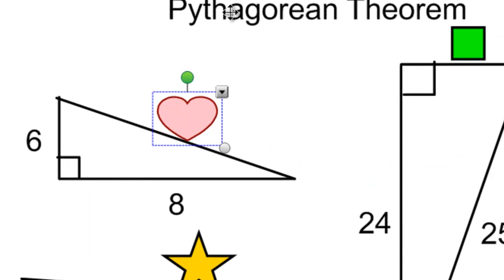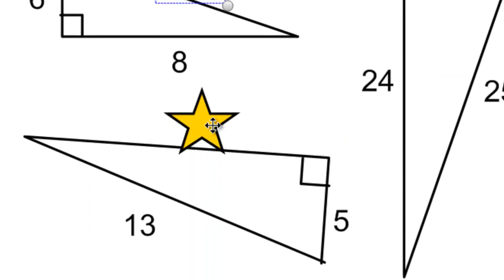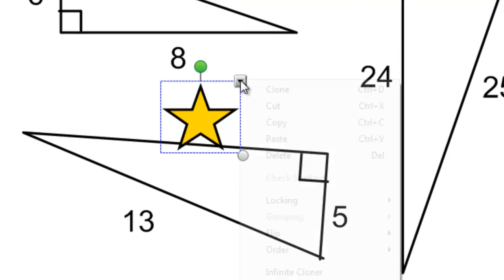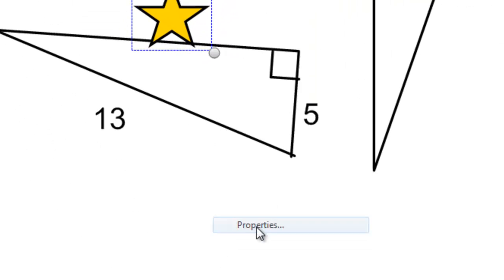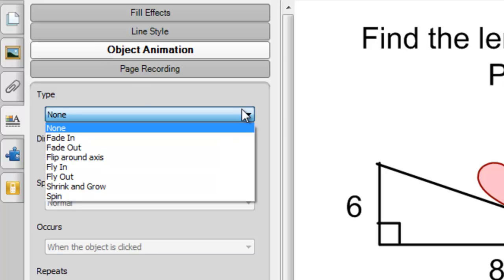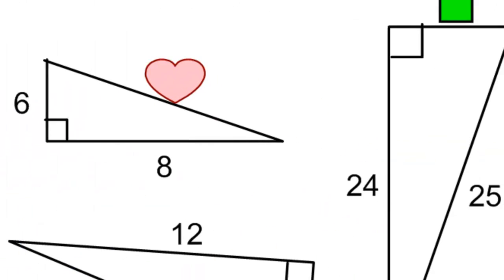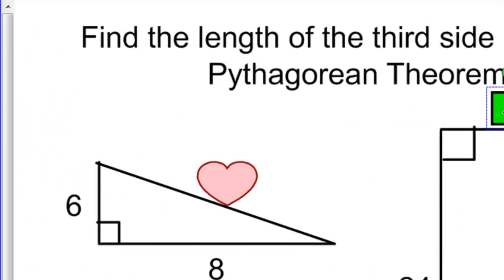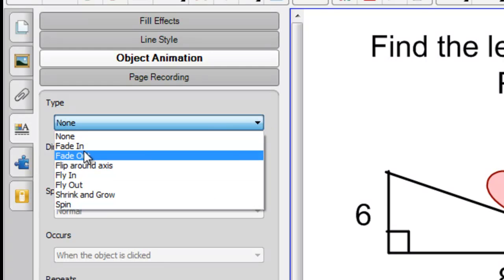Let's try it with a different one. Let's try it with the star. I click on the star. I come to Properties, Object Animation, and this one, I would like for it to fly out as well. This one, I want to fade out, so I'll click on Fade Out.